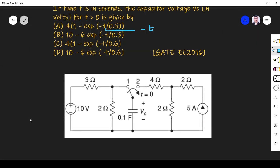This is the circuit they have given. Let us see, we have to find the voltage across capacitor Vc.